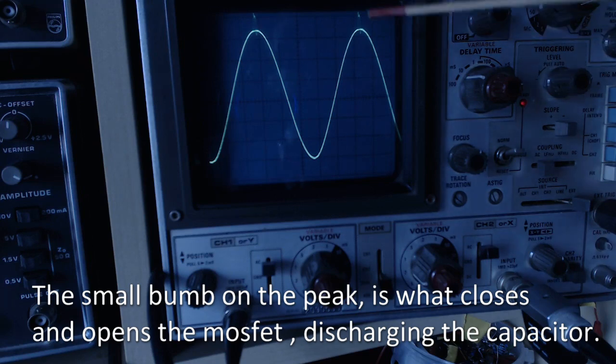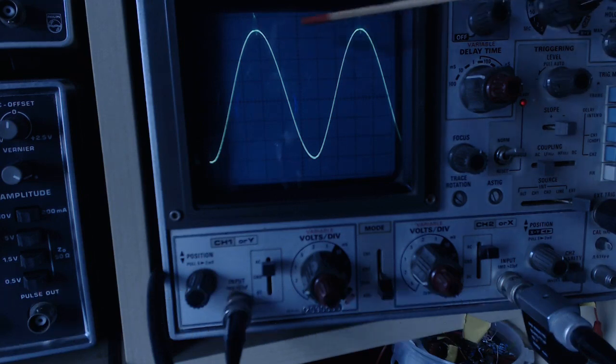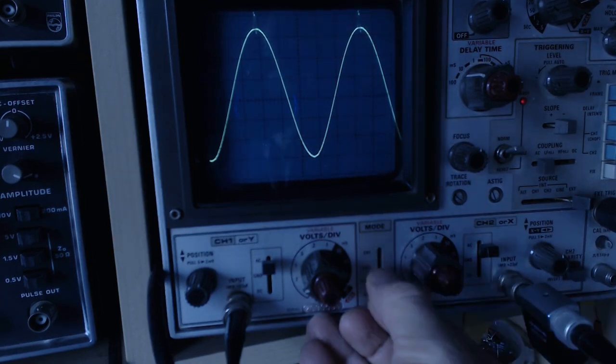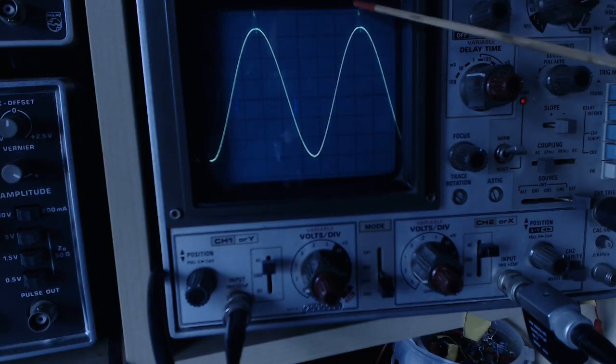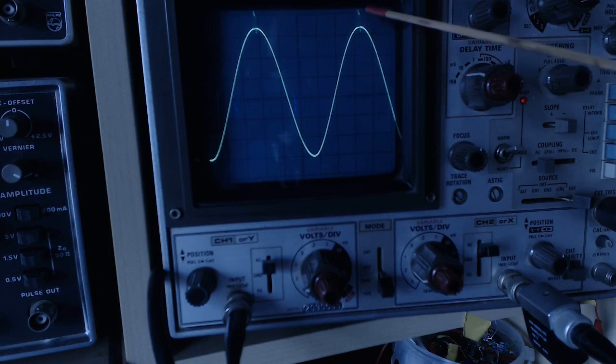What you can see here is the signal at the gate. I will show you now what happens to the resonant sine when I change the discharge phase angle. It is now on top where it should be.